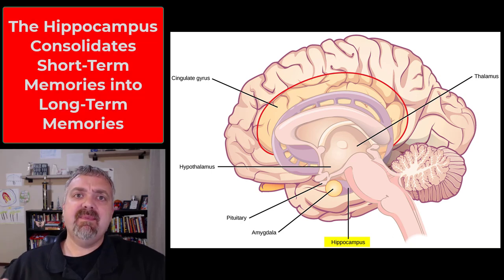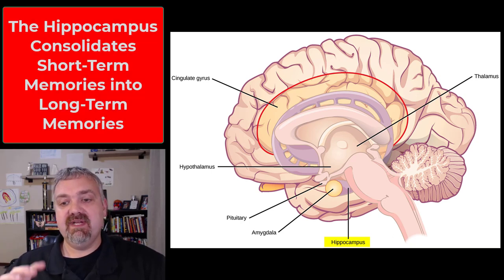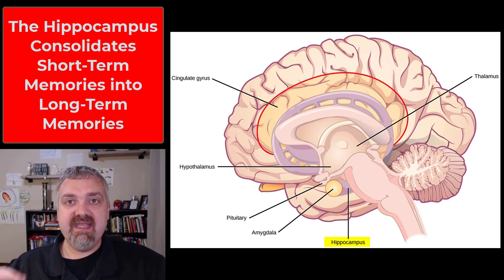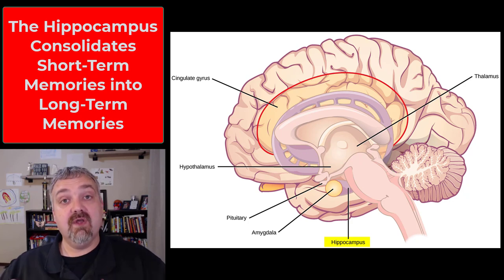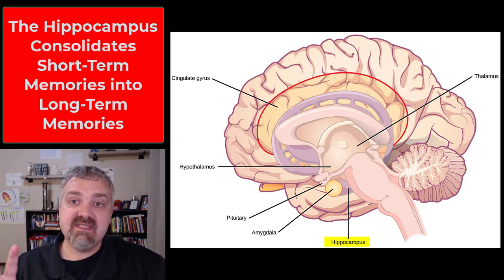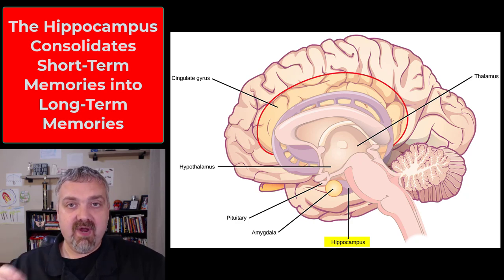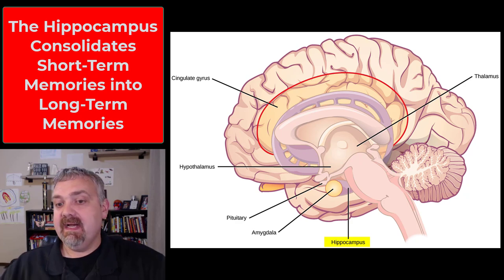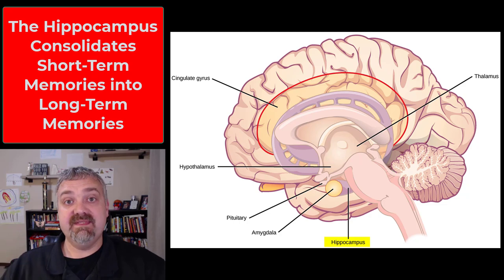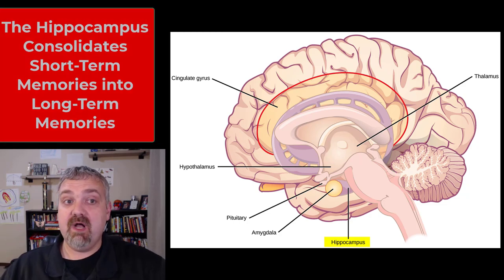The hippocampus — the word actually means seahorse because of what it looks like. When you hear hippocampus, I want you thinking memory consolidation. That's how short-term memories are moved into long-term storage. The entire limbic system plays a role in memory, but the hippocampus is the primary place where your typical memories are going to be consolidated. It also seems to play a role in the type of memories that help us with navigation, like spatial memories as well.